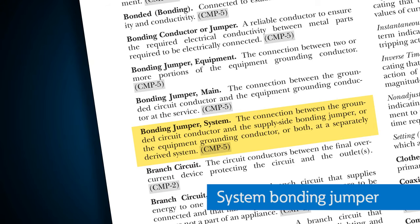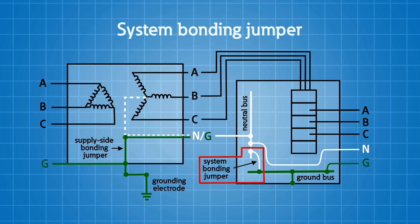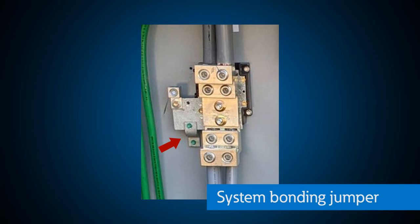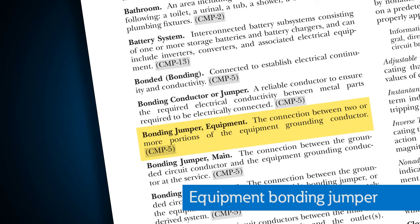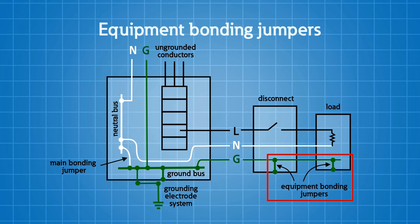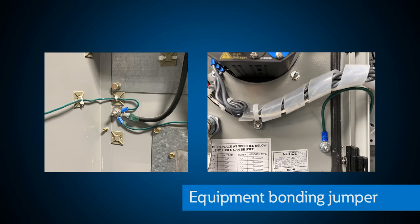Let's talk about the system bonding jumper: this is the connection between the grounded circuit conductor and the supply side bonding jumper. We have a grounded circuit conductor, we have a system ground where we're establishing our ground, and we need to bond those two together — that's what the system bonding jumper is. Your equipment bonding jumpers are the connections between two or more portions of the equipment grounding conductors, ensuring that everything is bonded together and that any jumpers between your equipment grounding conductor and the steel that needs to be bonded are properly in place.